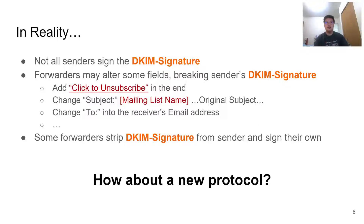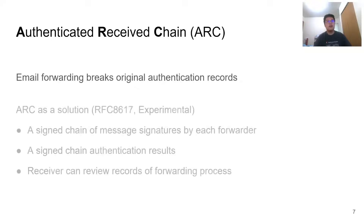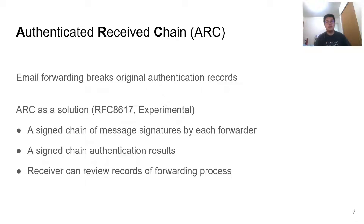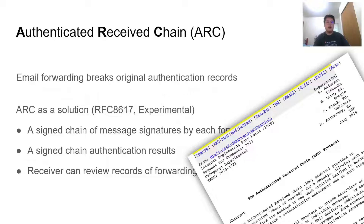So are there alternative solutions? How about a new protocol that takes forwarding into consideration? The main issue we've been discussing is that email forwarding breaks original authentication records. Is there a way to preserve them for a receiver? We find that ARC — the Authenticated Received Chain — is a security extension that has email forwarding in mind. ARC is designed to be a chain that carries authentication results and message signatures generated by all participating forwarders on the route. Therefore, all involved entities from sender to receiver can add their own records as well as review all previous records. ARC is documented in IETF RFC 8617 and is now in experimental stage.